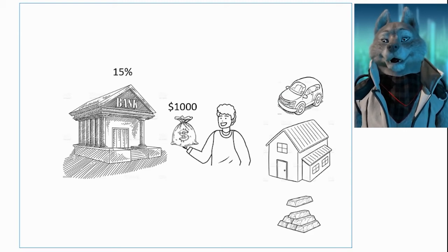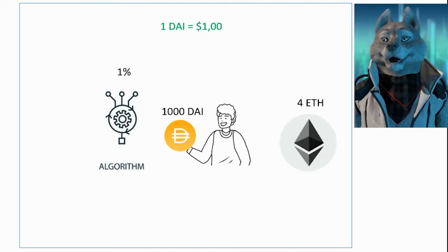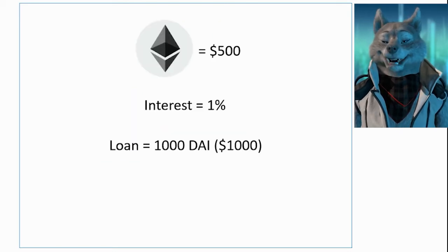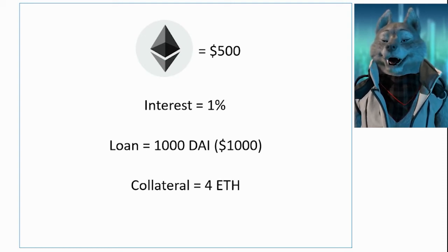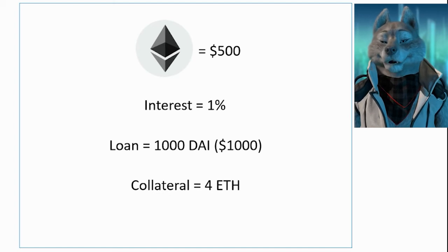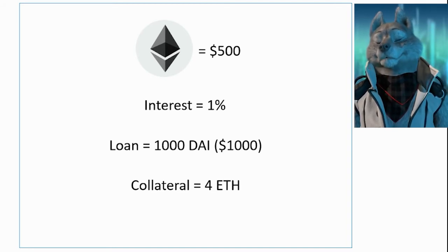These borrowed dollars are issued through the DAI token, which is equivalent to $1. The guarantee provided is made by another cryptocurrency, such as the ETH token. For example: the price of one ETH is $500, the interest charged for borrowing DAIs is 1% per year, and you want to borrow $1,000. You could leave 4 ETHs as collateral for the loan — in other words, you lock 4 ETHs to be entitled to receive 1,000 DAI tokens. This way, if you don't return the 1,000 DAI tokens with the respective interest, the protocol can sell your ETH tokens to pay off the debt.